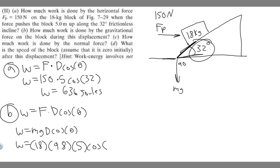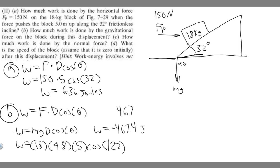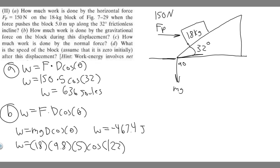So the angle is 122 degrees — cosine of 122. If you go ahead and do this: 18 times 9.8 times 5 times cosine of 122, you get minus 467.4 joules. So the answer to B is minus 467.4 joules.